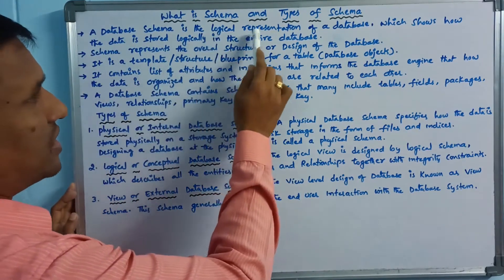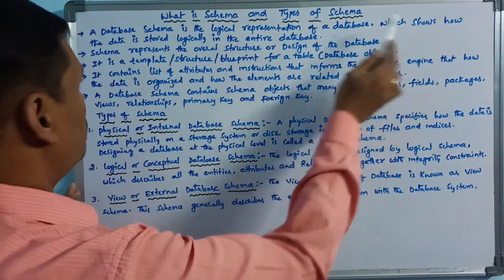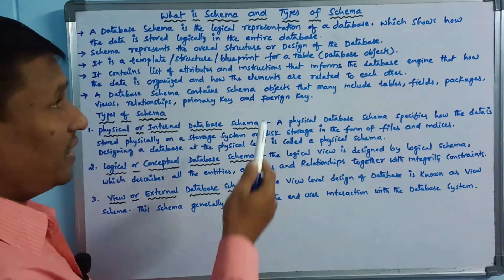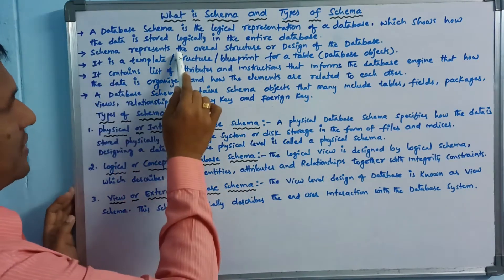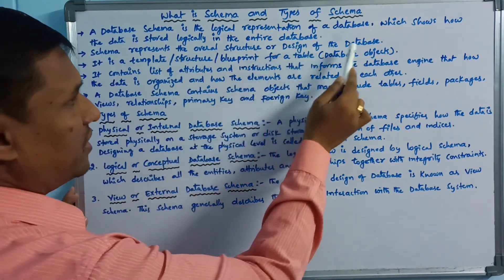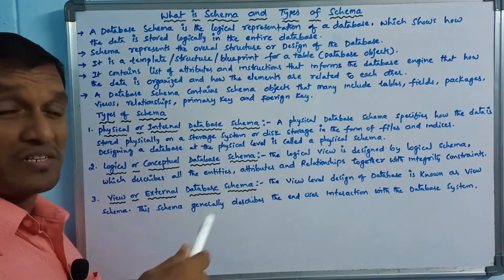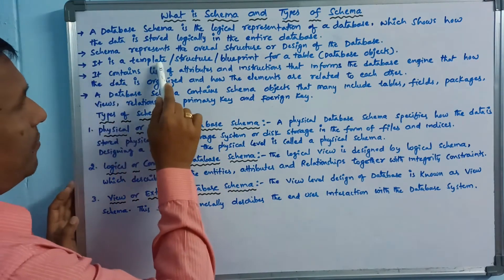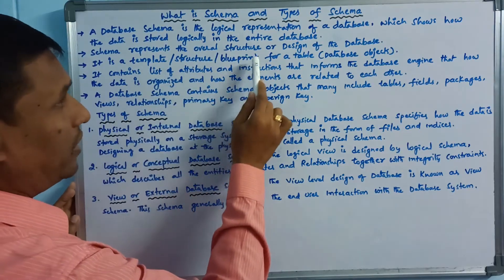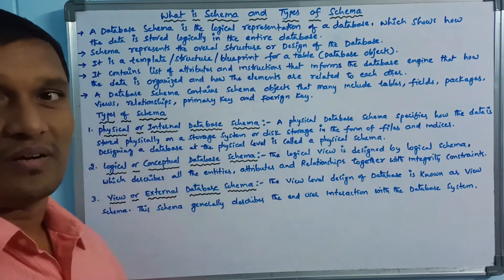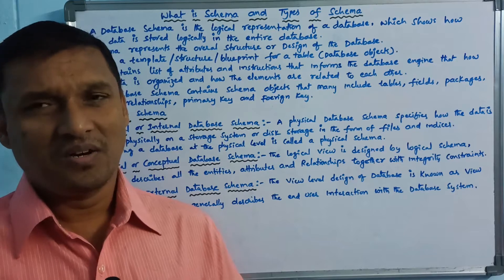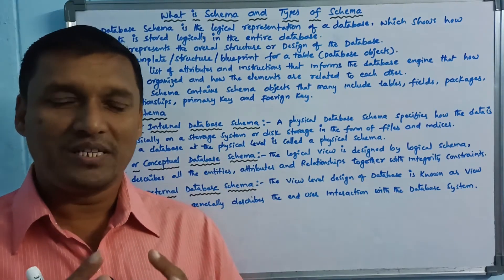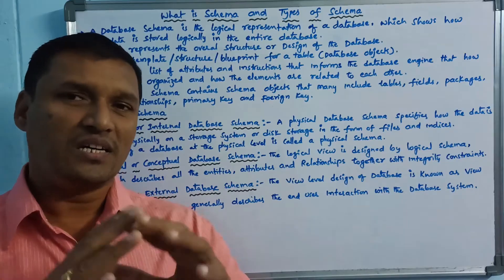I have a definition of database schema. It is the logical representation of the database, which shows how the data is stored logically in the entire database. The schema represents the overall structure or design of the database. If you want to design a database, it will be a logical representation.